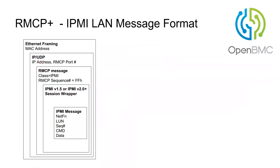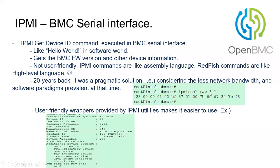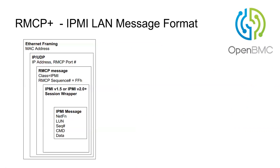For the LAN message format — the out-of-band interface — the packet has an Ethernet MAC address, then IP/UDP header, then an RMCP+ message at the application layer, then a session wrapper, and then the payload containing NetFn+LUN, command, and data. So the structure is: Ethernet header → IP/UDP → RMCP/RMCP+ → session wrapper → NetFn+LUN → command → data.